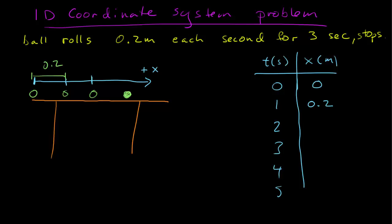By the second second, it had gone another 0.2 meters, so that would be 0.4. At three seconds, it had gone 0.6, at which point it had stopped. So four seconds later, it is still at that location, which is 0.6. And at five, it is still at that location, 0.6. There's my table.